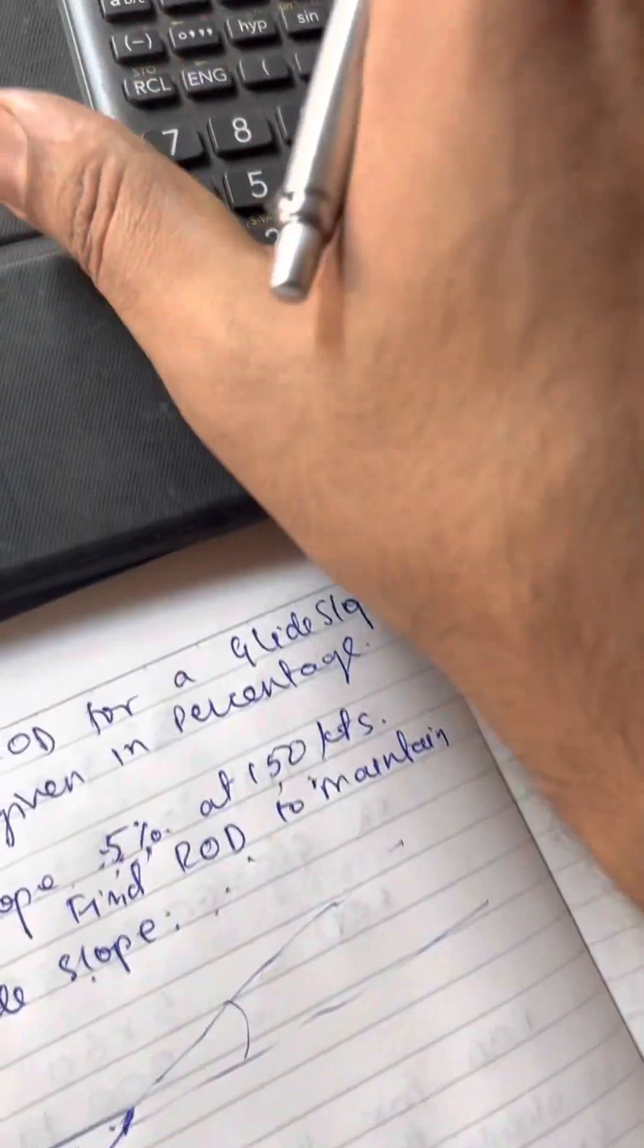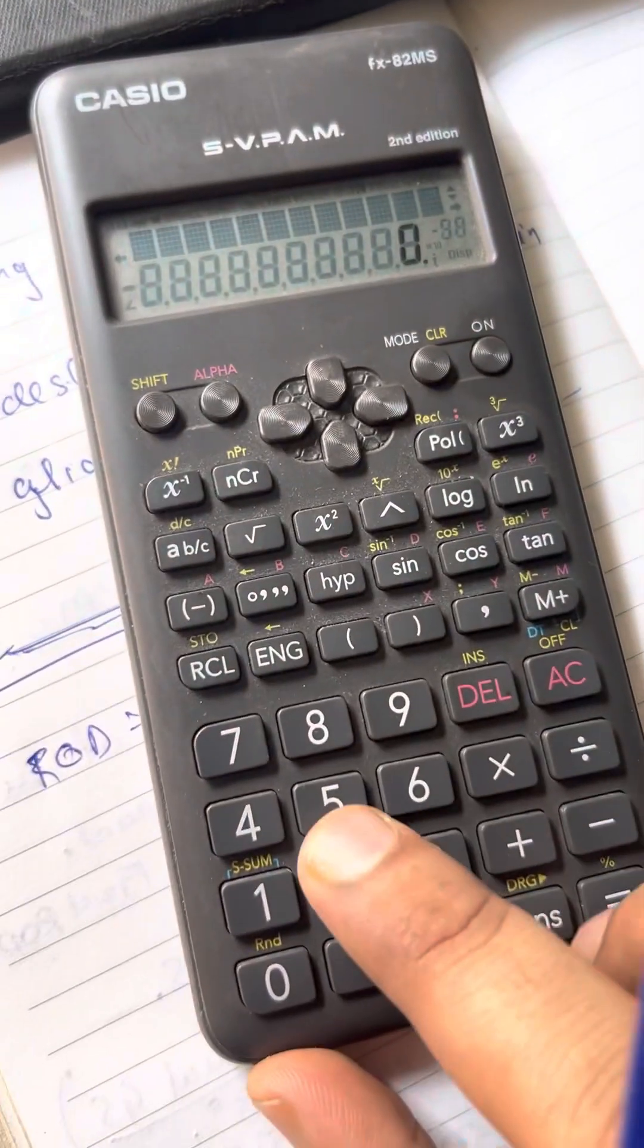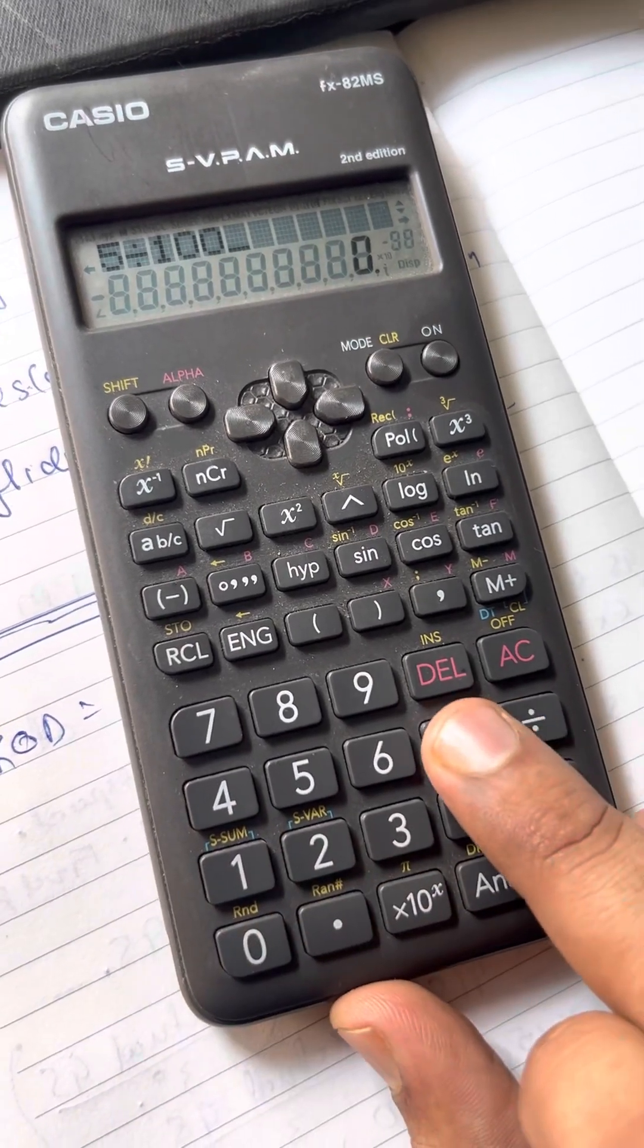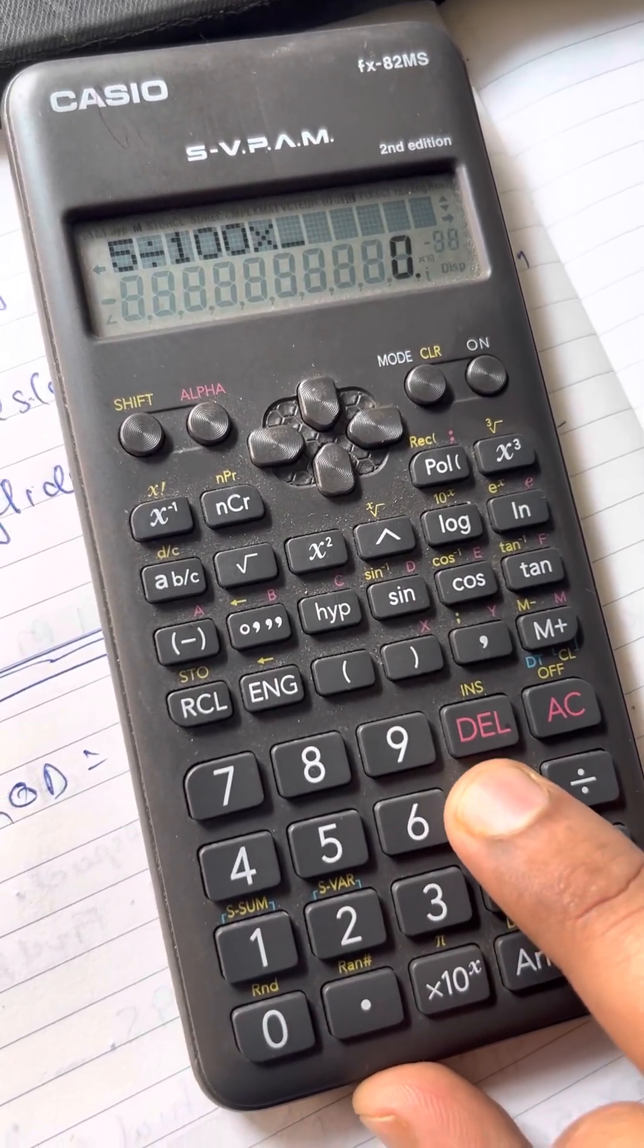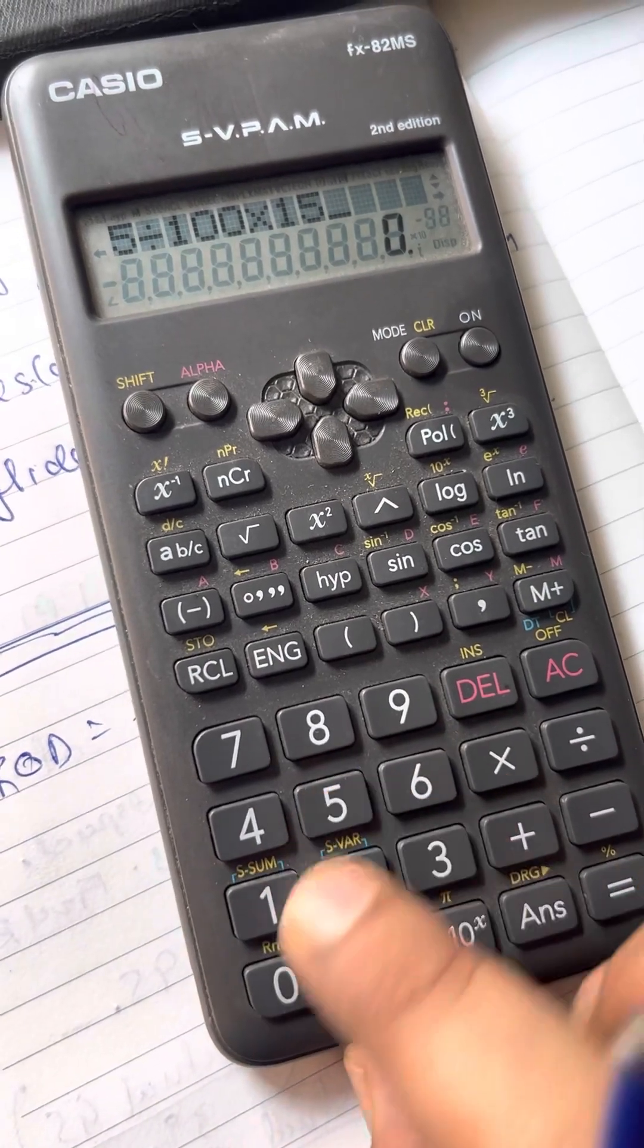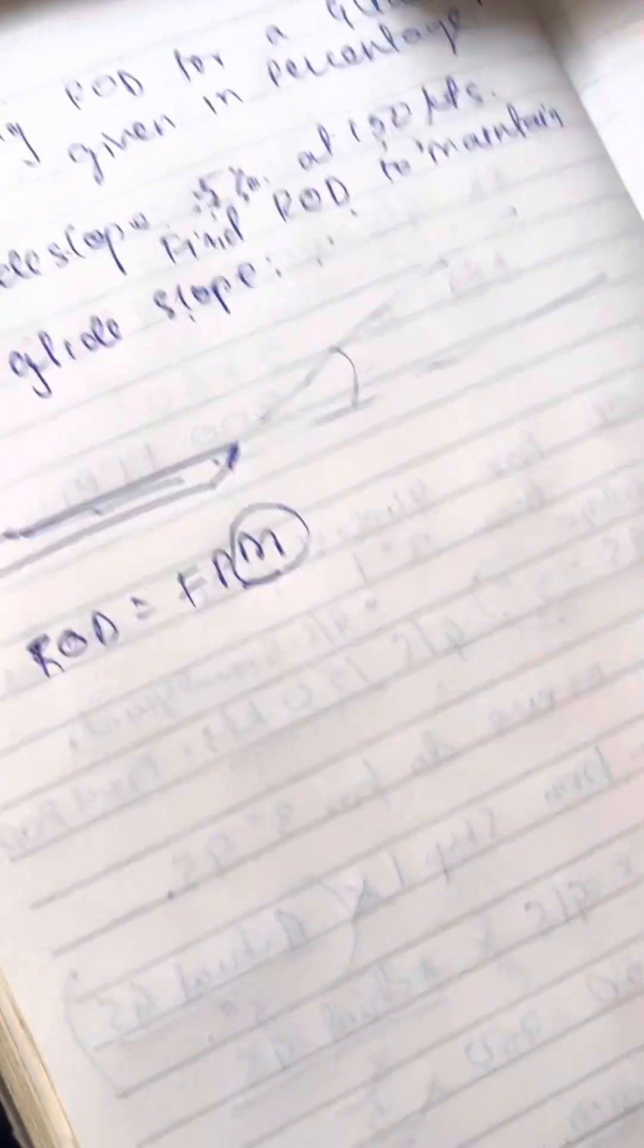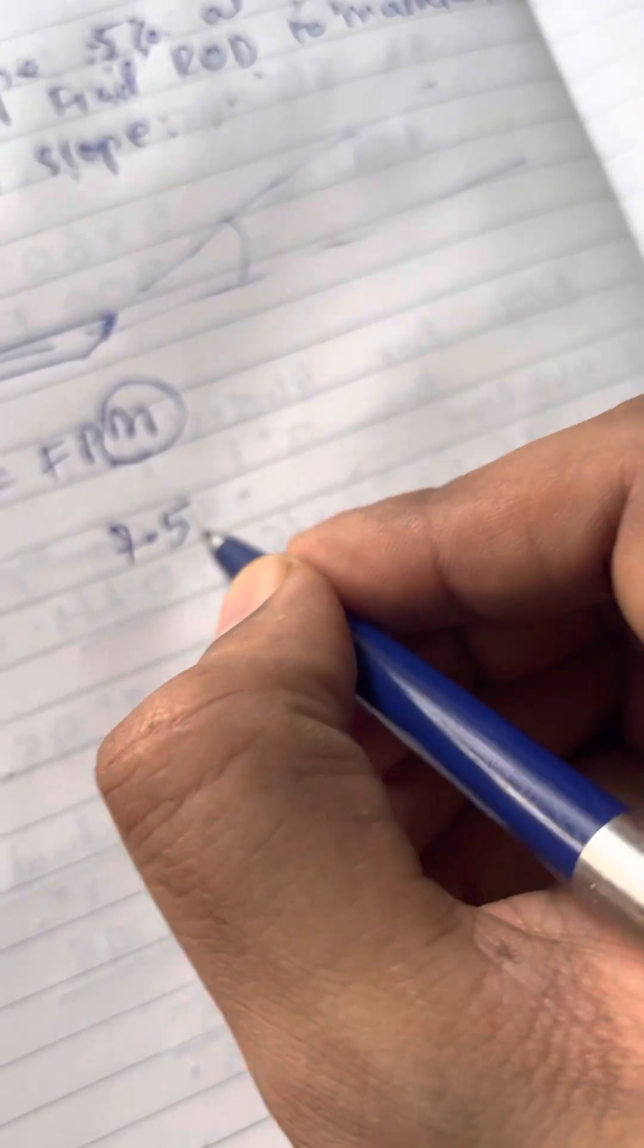5% of 150. 5 divided by 100, 5% I write as 5 divided by 100 into 150, I will get 7.5. So this 7.5...